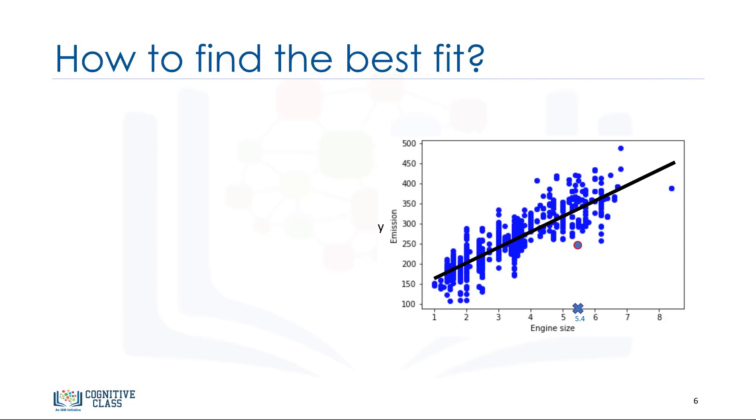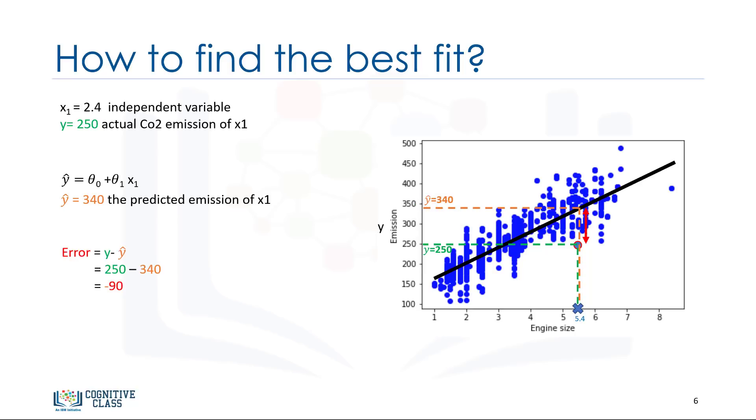For a moment, let's assume we've already found the best fit line for our data. Now, let's go through all the points and check how well they align with this line. Best fit here means that if we have, for instance, a car with engine size x1 equals 5.4 and actual CO2 equals 250, its CO2 should be predicted very close to the actual value, which is y equals 250, based on historical data. But, if we use the fit line, or better to say using our polynomial with known parameters to predict the CO2 emission, it will return y hat equals 340. Now, if you compare the actual value of the emission of the car with what we've predicted using our model, you will find out that we have a 90 unit error. This means our prediction line is not accurate. This error is also called the residual error.